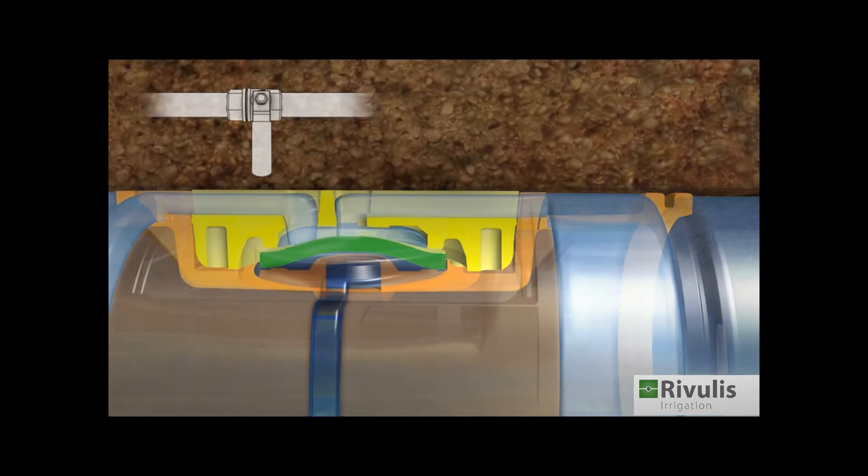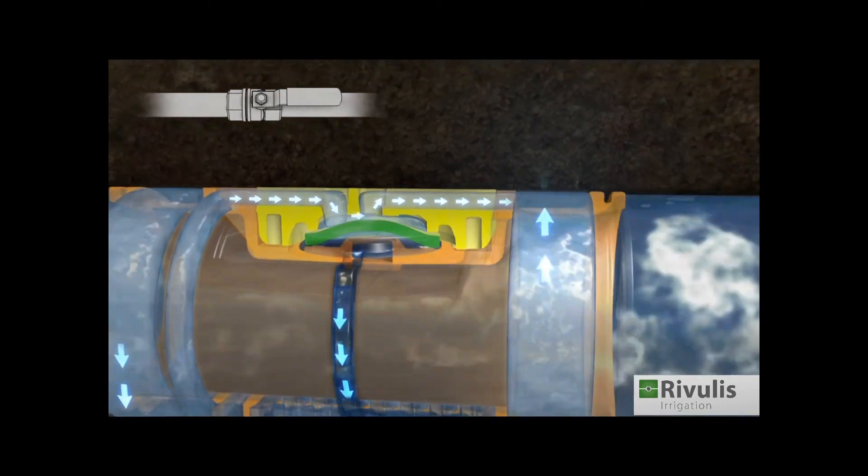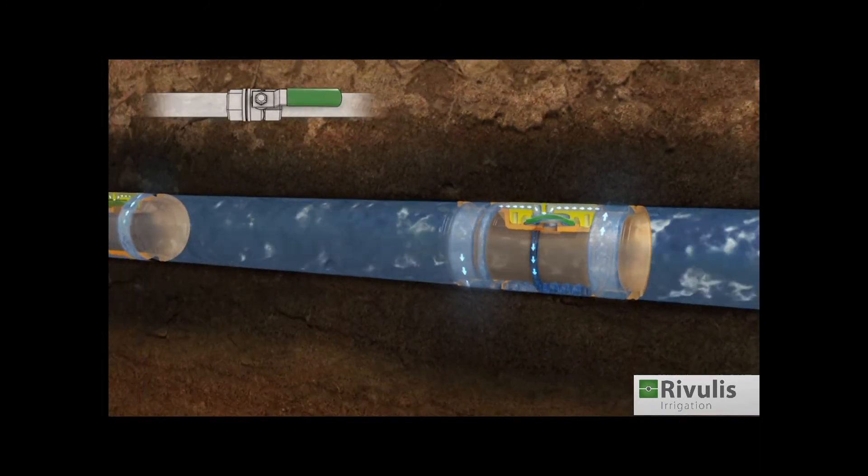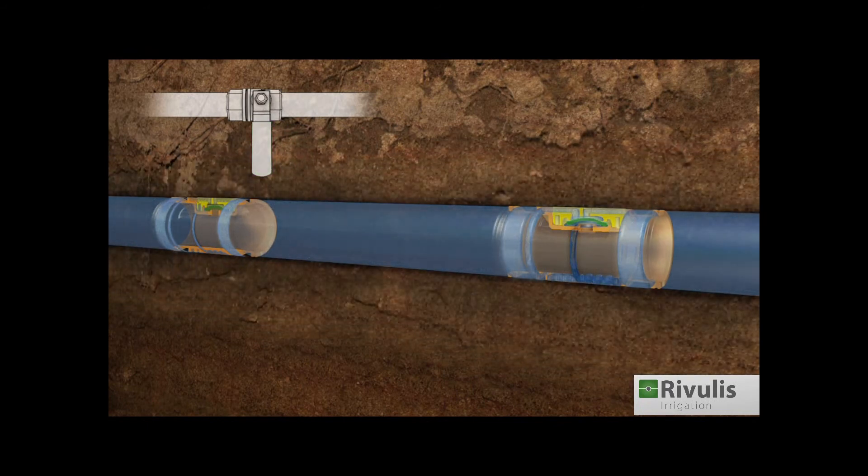As soon as the water is turned back on, the drippers resume operation. Regular maintenance is essential for an effective and long-lasting dripper operation.